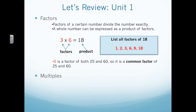5 is a factor of both 25 and 30, so we call this a common factor. 25 can be divided equally by 5, and 60 can also be divided equally by 5. So, 5 is a common factor of 25 and 60.